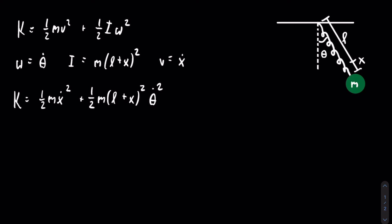There are two sources of potential energy in this system: gravitational potential energy and elastic potential energy. Using the zero point as where the spring meets the ceiling, we get that the gravitational potential energy is equal to negative mg times the quantity l plus x, times cosine of theta. The spring follows Hooke's law, so its elastic potential energy is one half k x squared.